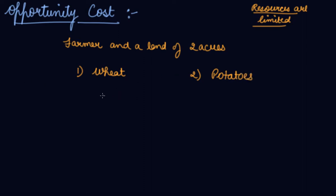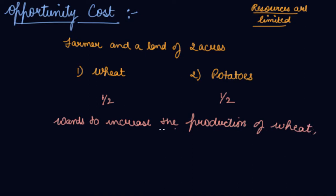Now what he is doing is, he is producing on a land. On half the land he is producing wheat. On half the land he is producing potatoes. If he wants to increase the production of wheat on the land, what will he do? He has to sacrifice the potatoes.